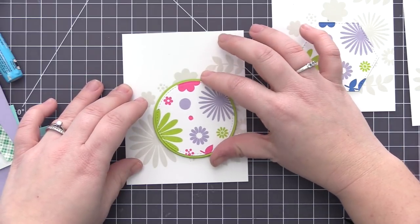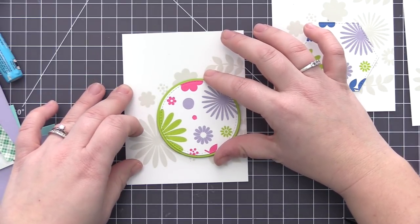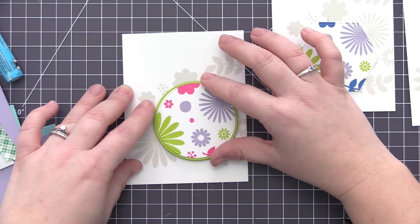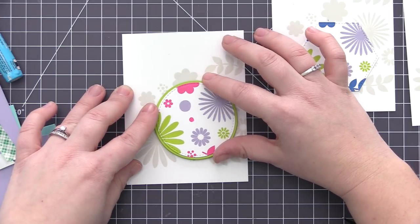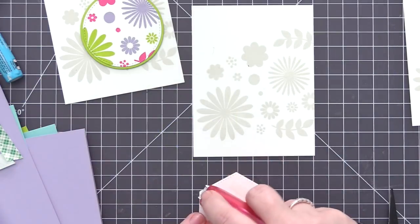So I adhered the stamped panel directly to the cardstock piece, and then I'm adding this onto the card panel with some foam adhesive. This is just going to give it a little bit of dimension since it's a very simple card and we just have some simple stamping on the panel.